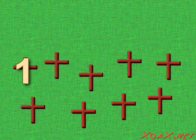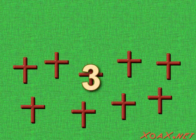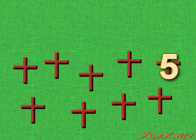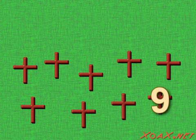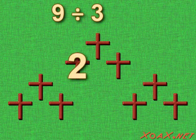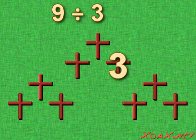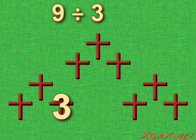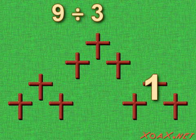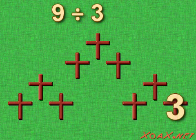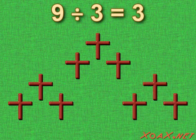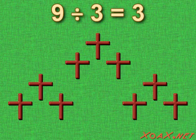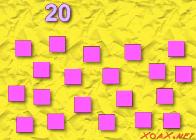If we have nine crosses and we divide them into groups of three: one, two, three; one, two, three; one, two, three. Then we have one, two, three groups of three. So nine divided by three equals three.